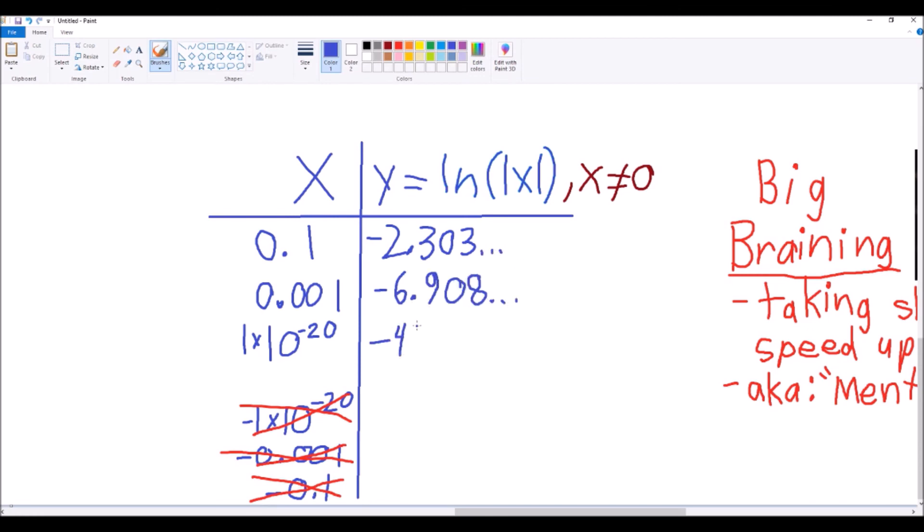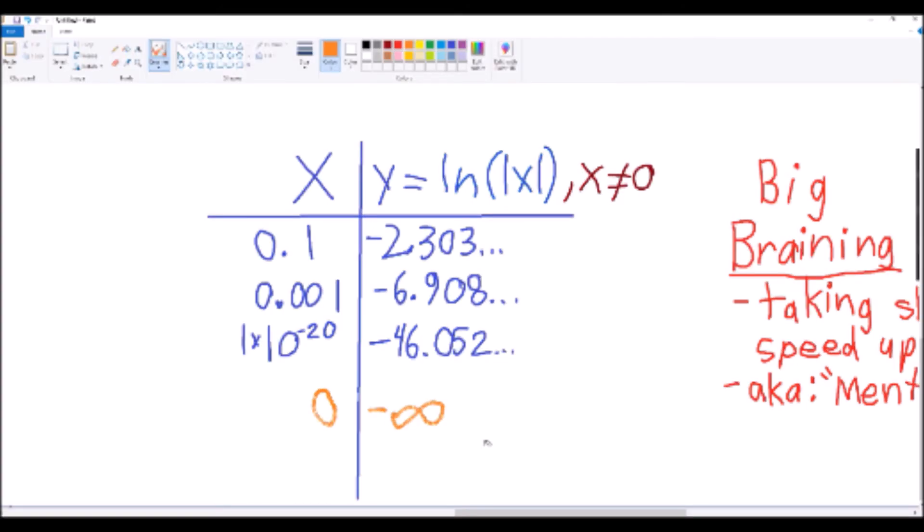Here we can see that as x approaches 0, y approaches negative infinity, although sure takes its time doing that, doesn't it? Later on, natural log will actually be giving us some trouble, specifically because it grows so slowly that it can seem to approach something finite.